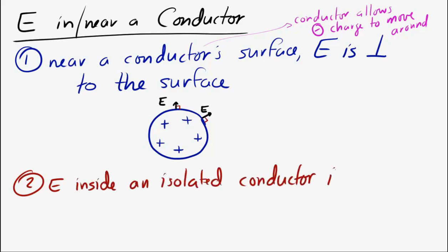The second one is that the electric field inside of an isolated conductor is zero. Okay. Now, why would that be? Well,